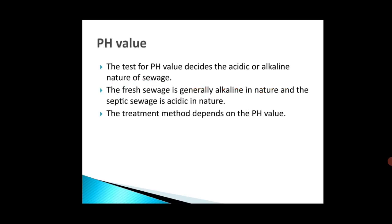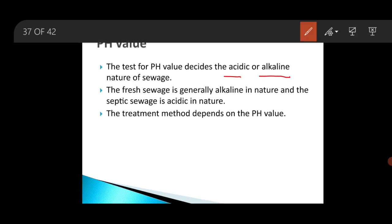The next factor is pH value. The pH value of sewage is determined in order to know its nature — whether it is acidic or alkaline — as the treatment method will depend upon the pH value. Fresh sewage is alkaline in nature; it converts to acidic after a few hours, and bacteria cannot survive in acidic sewage. Therefore, fresh sewage is alkaline and septic sewage is acidic in nature.